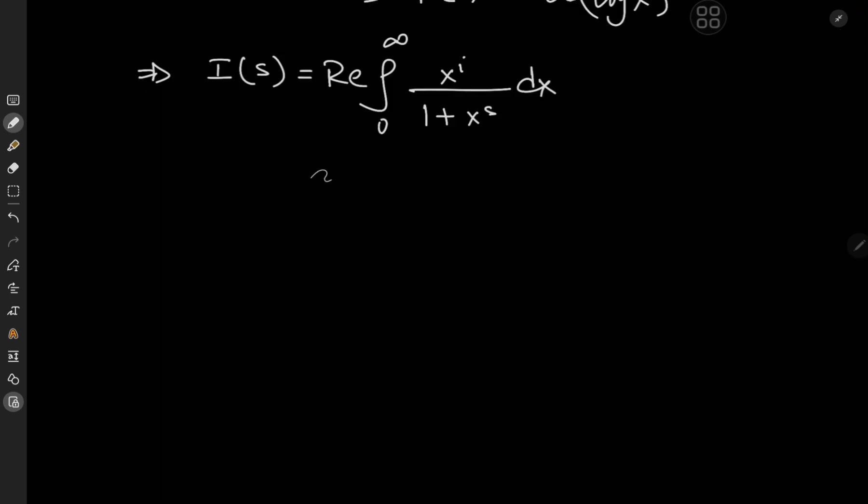Within our transformed integral, we're going to make a substitution, letting x to the s equal u, which implies that x here equals u to the 1 by s, and this further implies that dx equals 1 by s times u to the 1 by s minus 1 du.